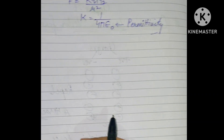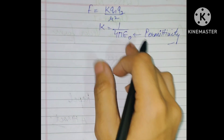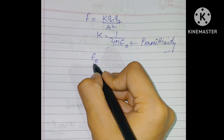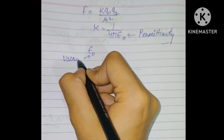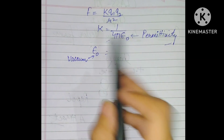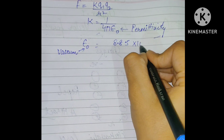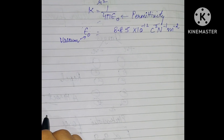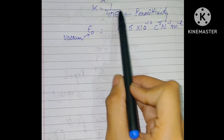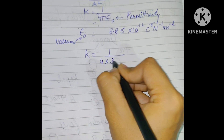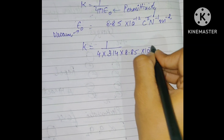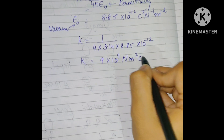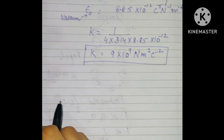ε₀ (epsilon naught) tells us that we are dealing in electrostatics. The subscript naught represents that we are talking about vacuum. The value of permittivity in vacuum is 8.85 × 10⁻¹² C²N⁻¹m⁻². Substituting this into k = 1/(4πε₀): k = 1 / (4 × 3.14 × 8.85 × 10⁻¹²) = 9 × 10⁹ N·m²·C⁻².